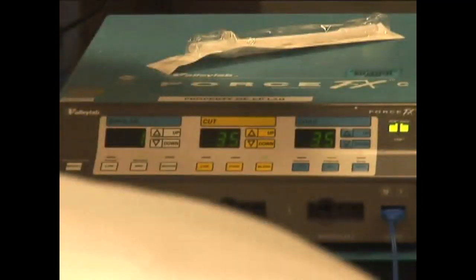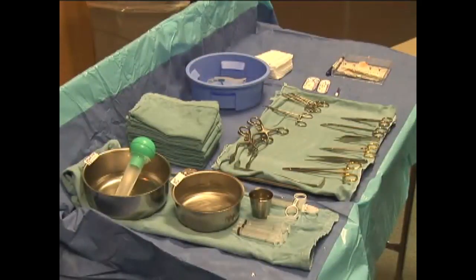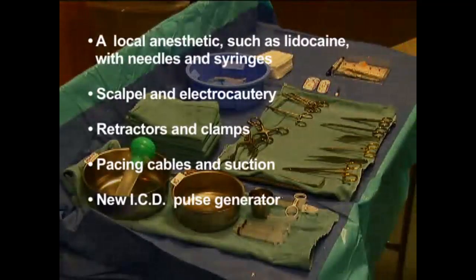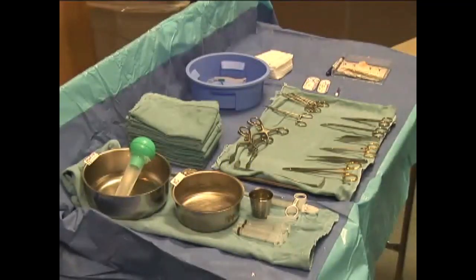We use 35 watts for cut and coagulation with the Blend 3 setting. The equipment needed for the procedure should be immediately available, including a local anesthetic such as lidocaine with needles and syringes, scalpel and electrocautery, retractors and clamps, pacing cables and suction, and the new ICD pulse generator. The table should be well organized to easily find the tools needed.